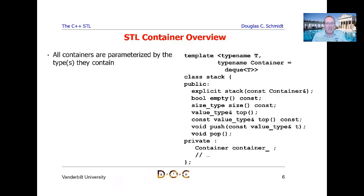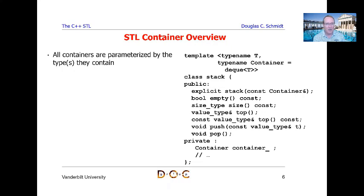All containers in STL are parameterized by the types that they contain. If you're familiar with Java, you probably know that Java has collections, which are abstract data types parameterized by the types they contain. STL containers are very similar in concept to Java collections, although the implementations are quite different. Java collections use inheritance and dynamic binding heavily, whereas STL containers use generic programming, parameterized types, and non-virtual methods to achieve performance and extensibility.